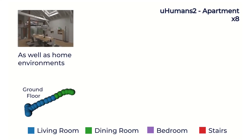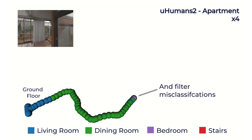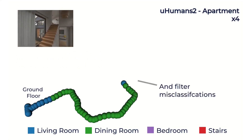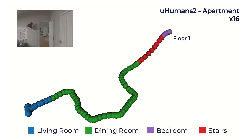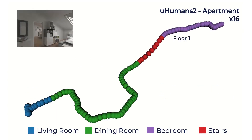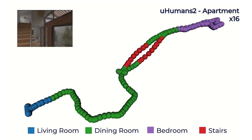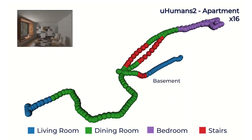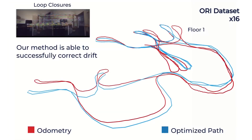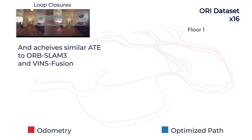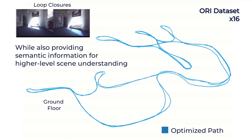We are able to segment open floor plans, such as this room, which consists of a living and dining room, and effectively filter misclassifications to achieve consistent segmentation results. Our place recognition method is also able to effectively correct drift, achieving similar ACE results to state-of-the-art SLAM, while also providing semantic scene understanding.